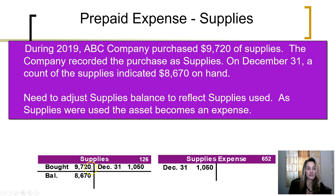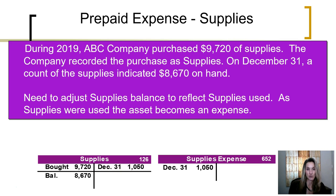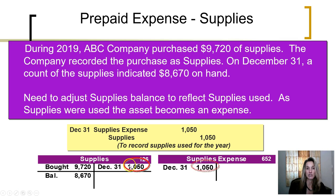What we're seeing in the T-accounts is that the purchase of supplies increased the asset account to $9,720. At the end of the year, the account needs a balance of $8,670 to reflect the actual supplies on hand. Thus, we decrease the account by the difference — $1,050 of supplies were used. We decrease supplies with a credit and record $1,050 as supplies expense. The journal entry is a debit to supplies expense for $1,050 and a credit to supplies for $1,050. This adjusting entry is prepared and entered into the general journal.